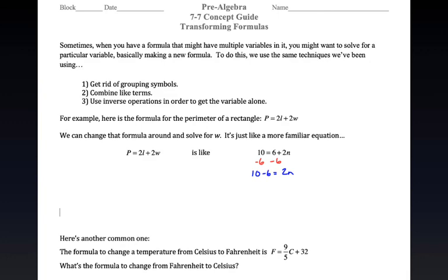Humor me for just a second - don't turn the 10 minus 6 into 4, just leave it like that. What do we do next to get N by itself? It's being multiplied by 2, so we need to divide by 2.